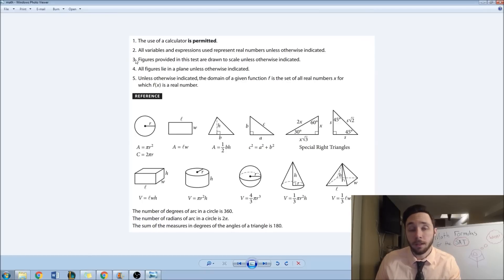So two says all variables and expressions used represent real numbers unless otherwise indicated. This is good. So what if they gave you a problem with i involved? Well, if they're referring to the imaginary unit, they're going to specifically say for i, where i is equal to the square root of negative one. This is just an added disclaimer for that. It's nice to know that they're not trying to trick you.